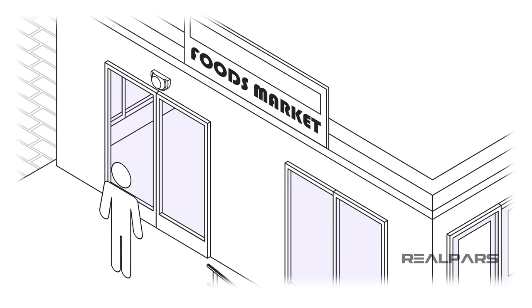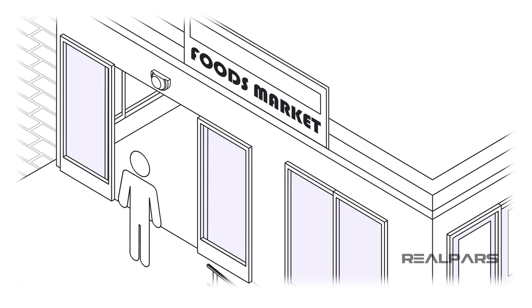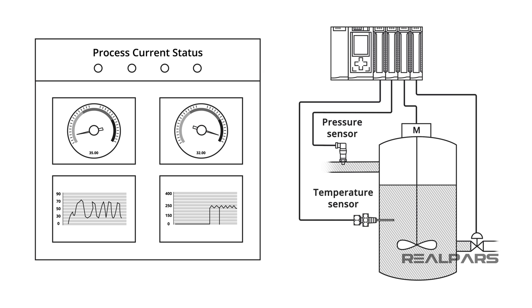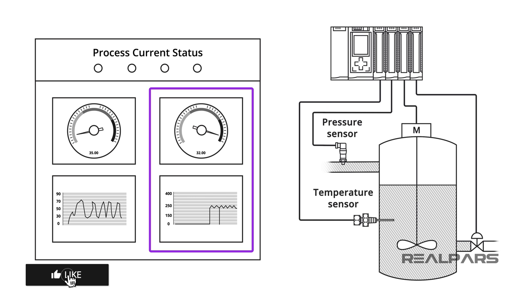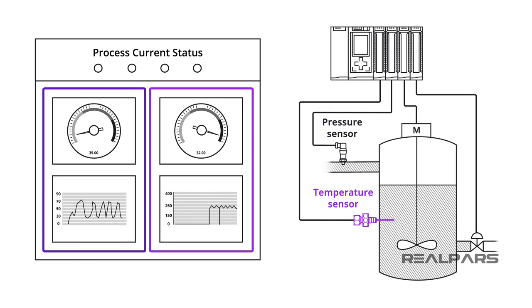As you approach the grocery store, the door automatically opens because of a sensor. In your plant, the batch process temperature and pressure are displayed and controlled as a result of output from sensors.